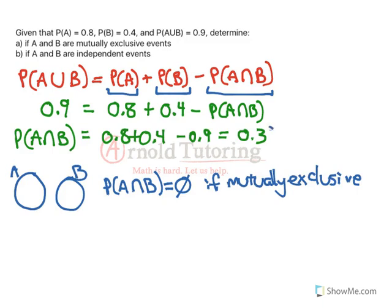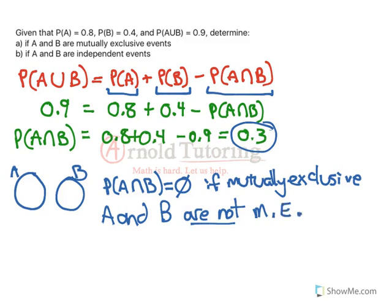Since it's not 0, it's 0.3, we know that A and B are not mutually exclusive. In other words, A and B can happen together with a probability of 0.3. So that's part A.